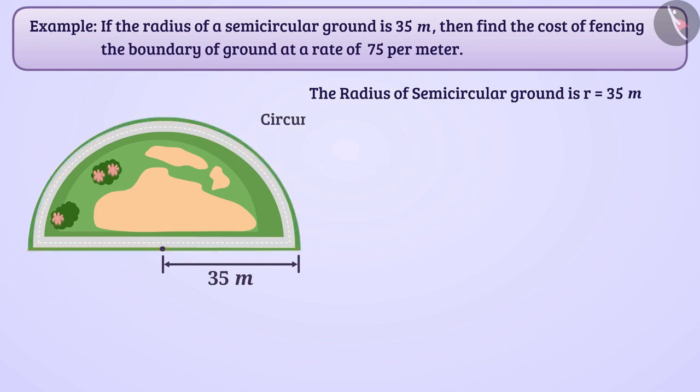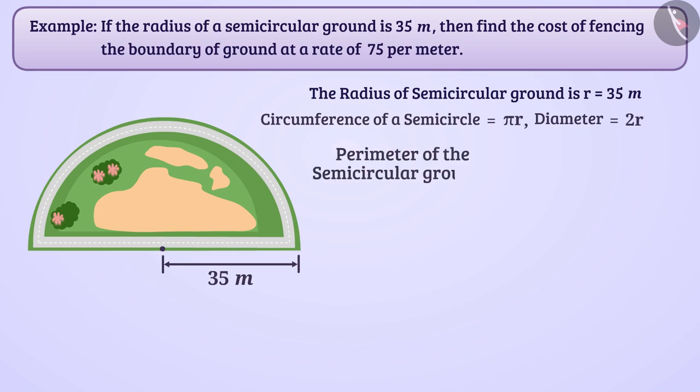We know that the circumference of a semicircle is πr and the diameter is twice the radius 2r. So, we can say that the perimeter of semicircular ground is πr + 2r.